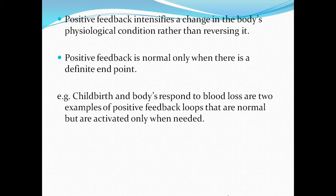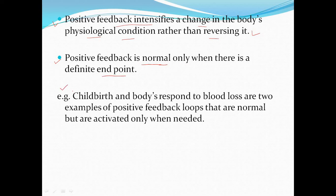Positive feedback loop intensifies changes in the body's physiological condition rather than reversing it. There is no reversal in the positive feedback system. It intensifies the process when the body needs to stop, and it occurs in a stepwise cascade manner. Positive feedback is normal only when there is a definite end point. The major examples are childbirth and the body's response to blood loss — two examples that are normal but activated only when needed.